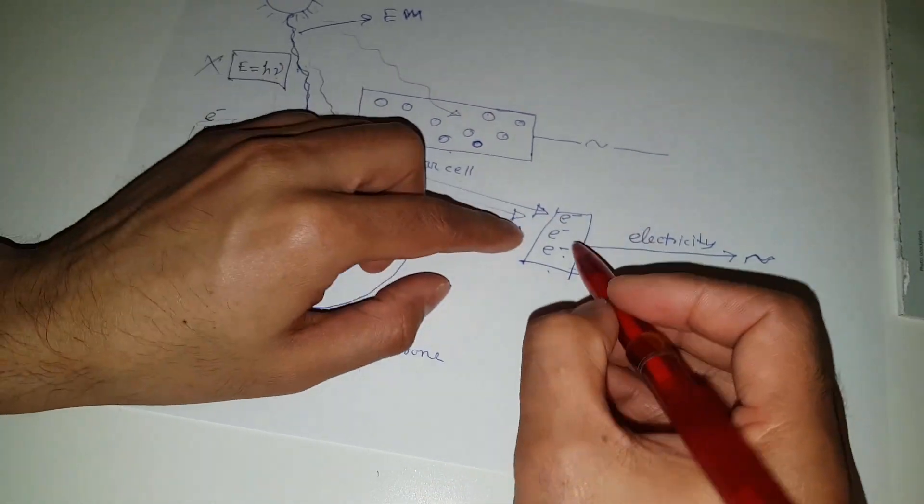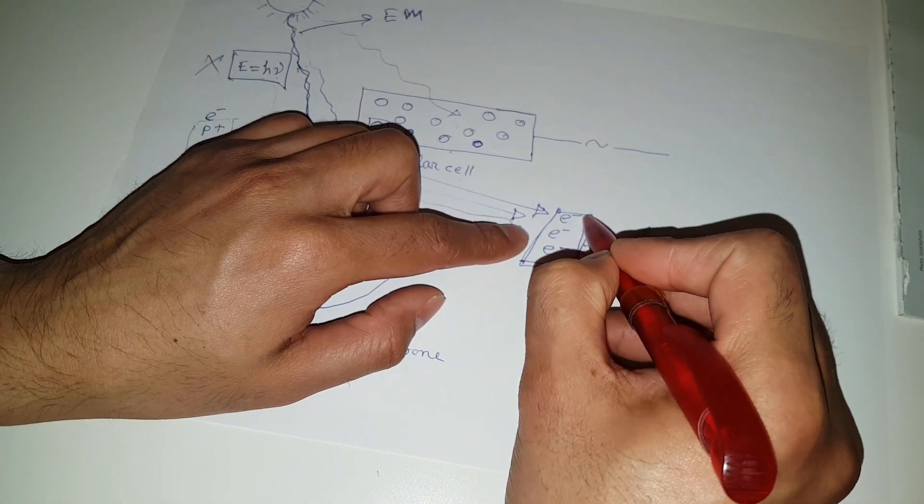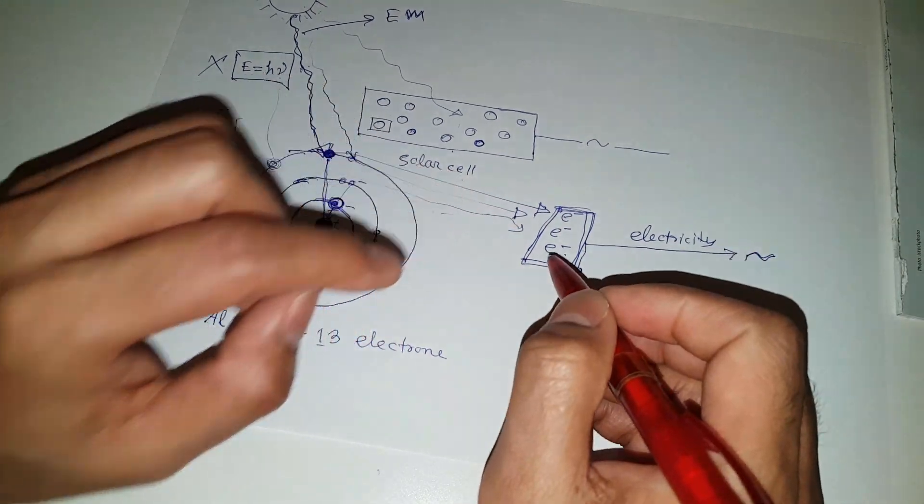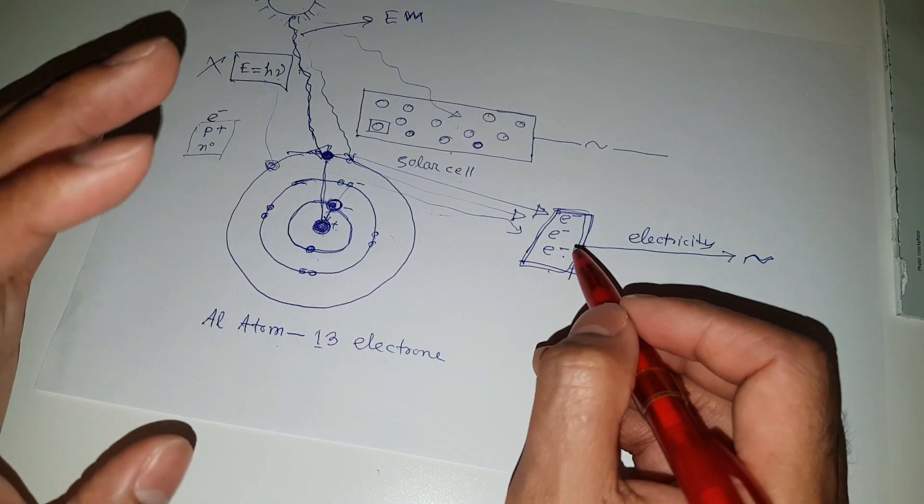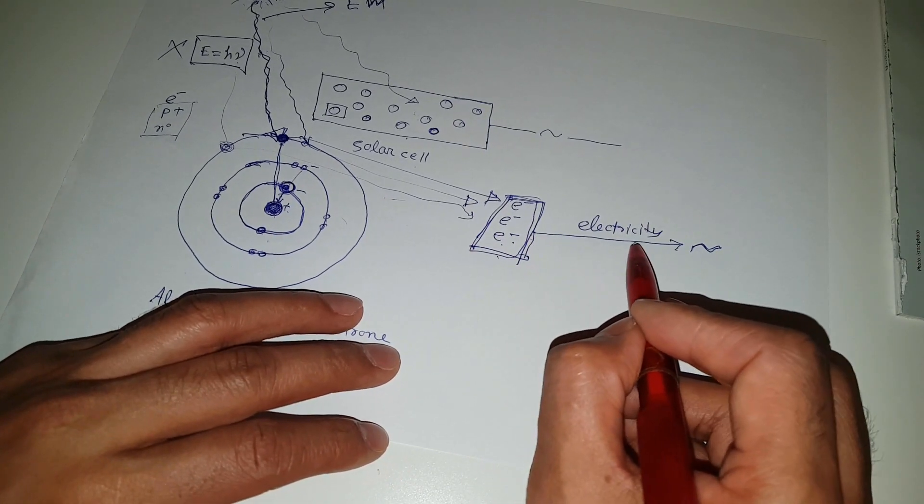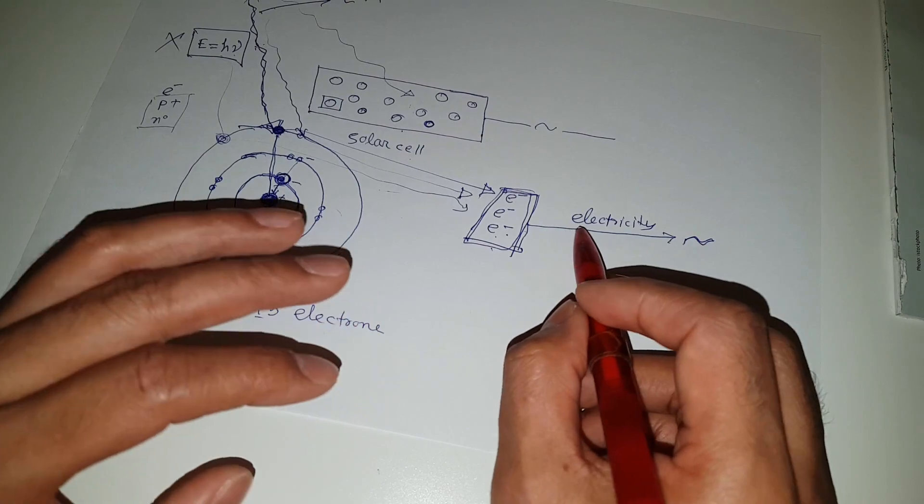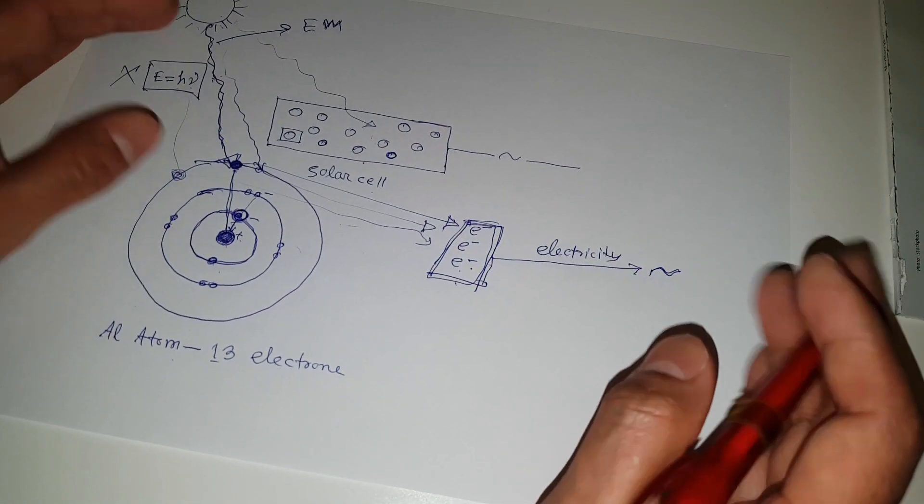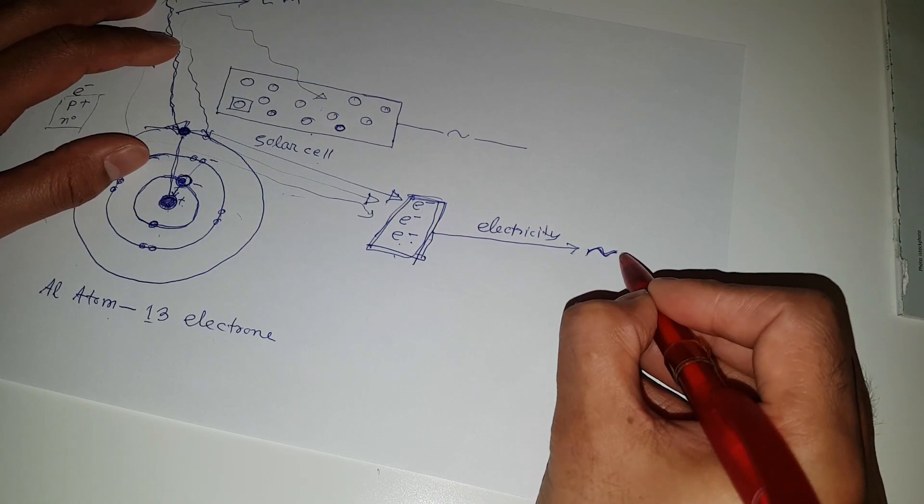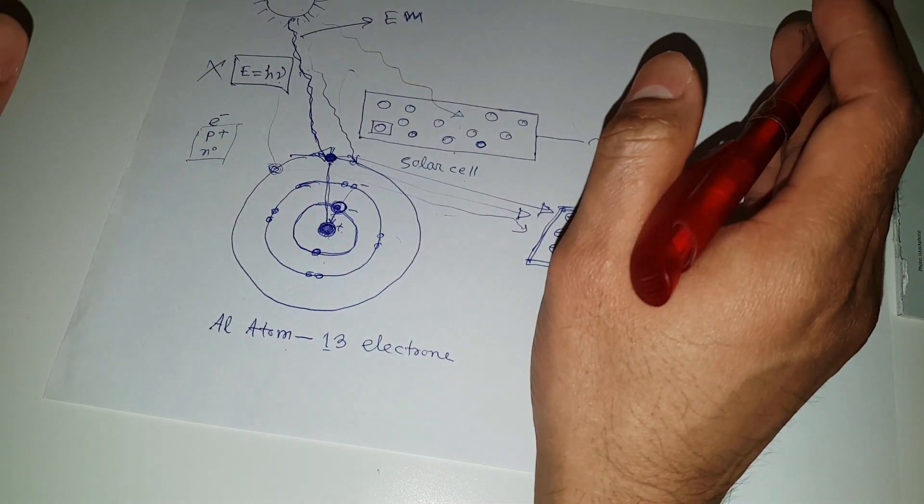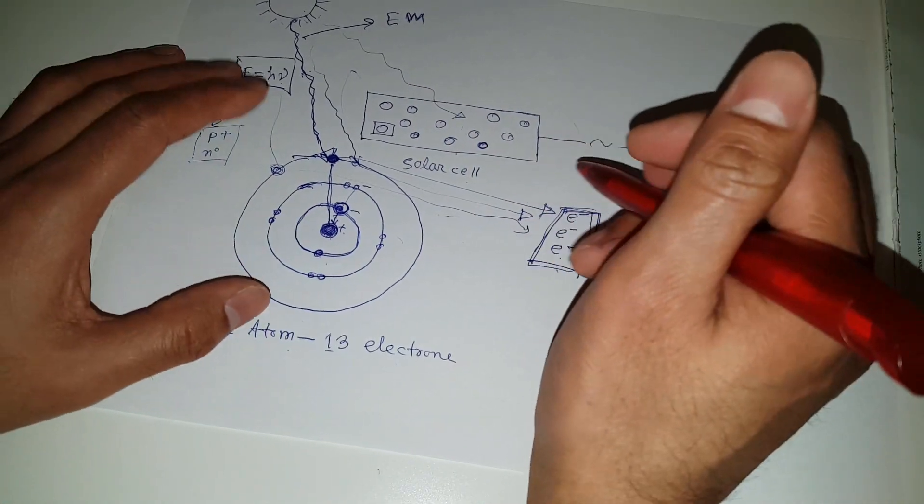And those electrons, outermost electrons get free. And they are compiled together. And they make a lot of electron array or a lot of electron clouds. And those electron clouds are flowing through wires with some circuit or semiconductor equipment. And finally, we are getting AC electric power. And this whole effect is called the photoelectric effect.